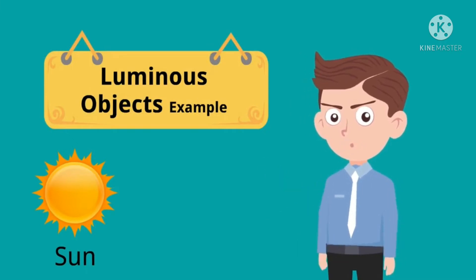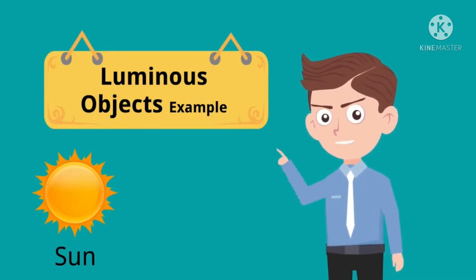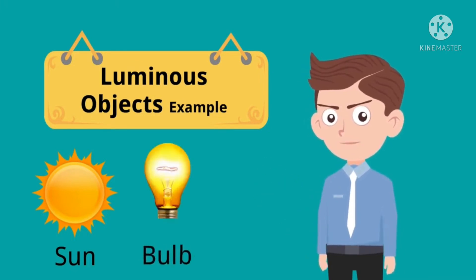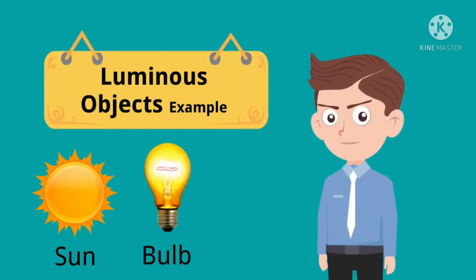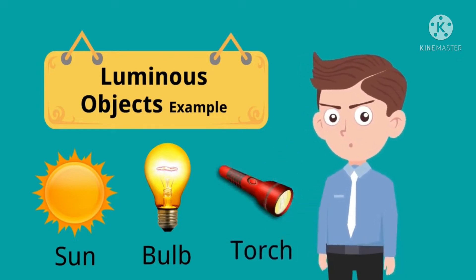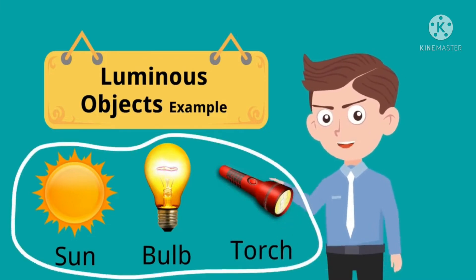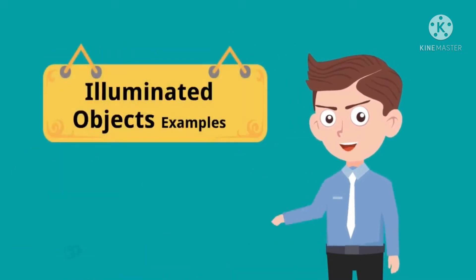Luminous objects — examples: the sun. Sun is the ultimate source of light in our daily life, in our universe. We can get light from the sun. At night we switch on a bulb and we are able to see it — the bulb gives light, so it is a luminous object. And in the same way, a torch gives light, so torch is also a luminous object. These are known as luminous objects.